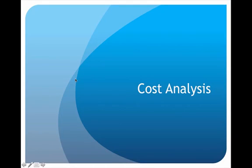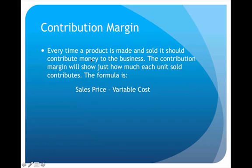This is the video lecture on cost analysis. The first thing we're going to learn about is how to calculate contribution margin. Every time a product is made and sold, it contributes a certain amount of money to the business, but not as much as you would think because the business has to produce that particular unit. The formula for contribution margin is sales price minus variable cost.